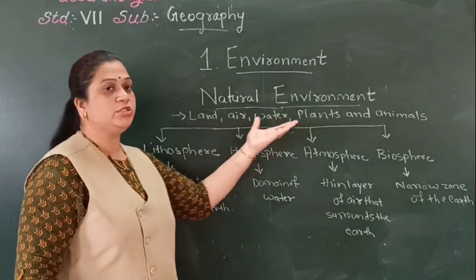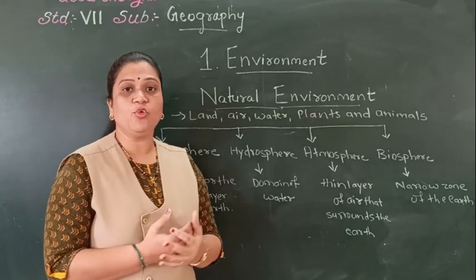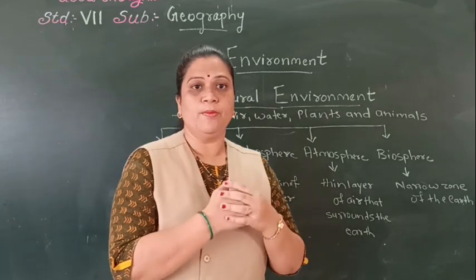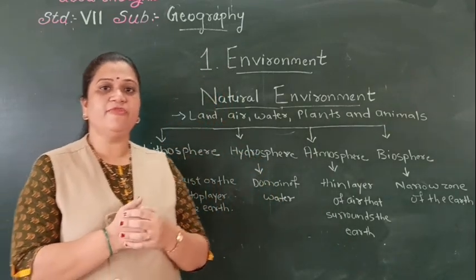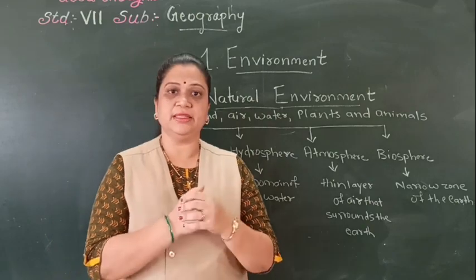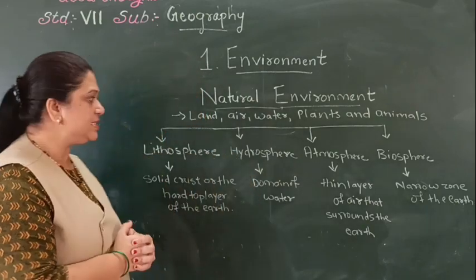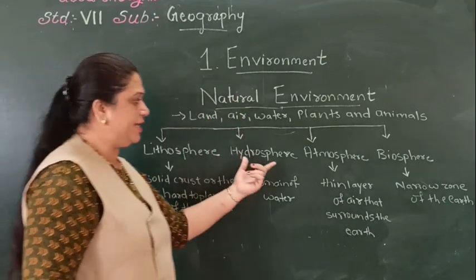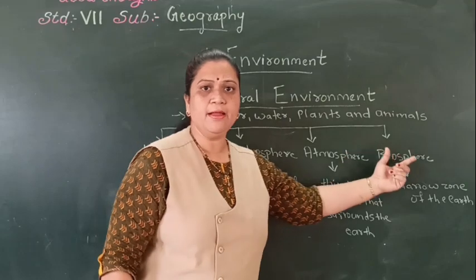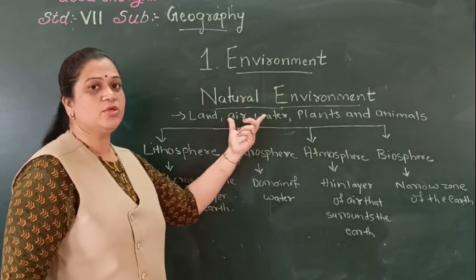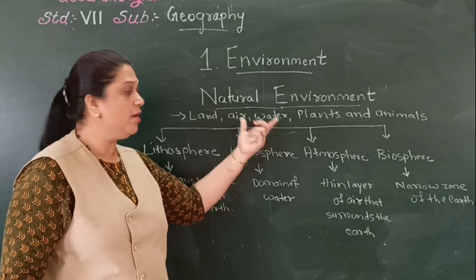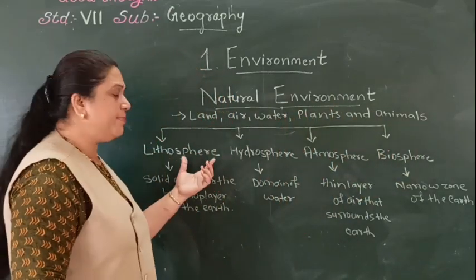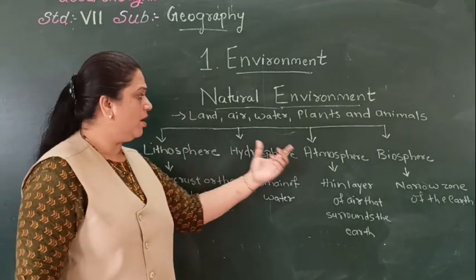Land, air, water, plants and animals — where do we see all these things on the earth's surface? We see them in different domains. You have studied about the different domains of the earth in earlier classes. The different domains of the earth are lithosphere, hydrosphere, atmosphere and biosphere. These components of the natural environment are found in these different domains, so let us study them one by one.